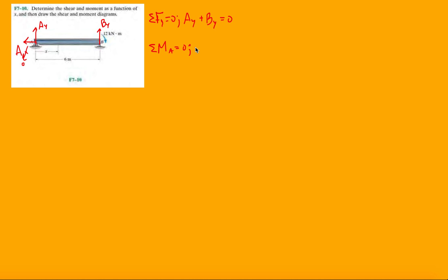So, taking a moment about A, we have BY times 6, counterclockwise, minus 12. Alright? So, that gives me 12 divided by 6, that gives me 2 kilonewtons for BY.